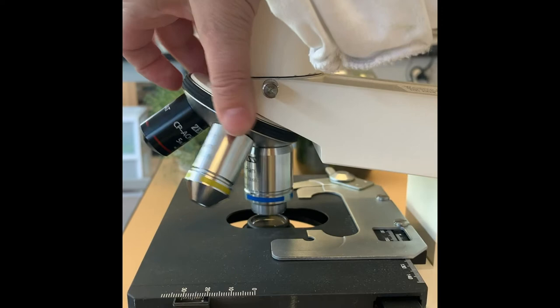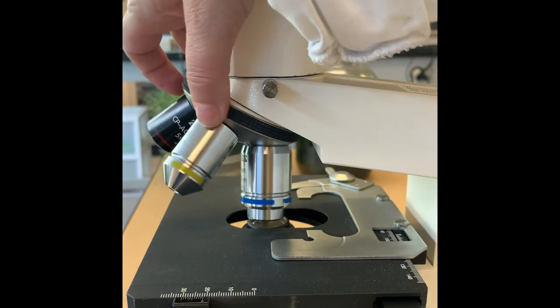Finally repeat again with the 400x or high power objective. Notice here you can't see any of the lines at all, so we know that the value is less than a millimeter, but we don't really have any landmarks to tell us where it is in that range.